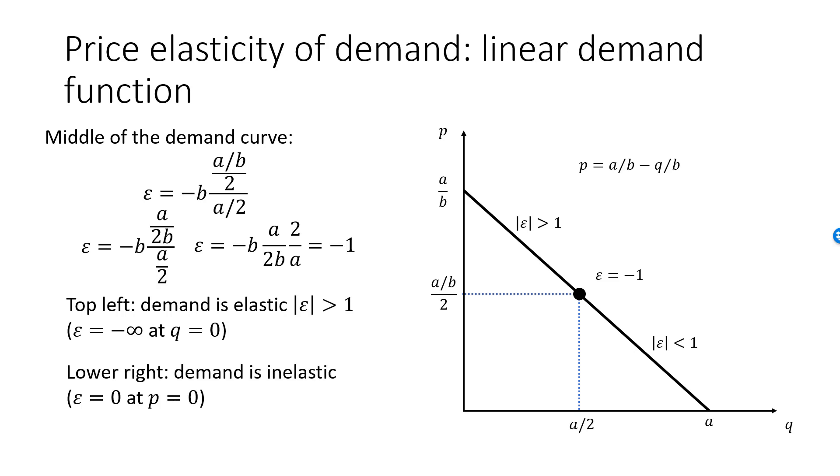Moving from the middle down and to the right, the absolute value of epsilon will decrease and demand becomes inelastic. Same reason: dQ/dP does not change, P falls and Q increases, so the ratio P over Q falls. Increasing the price by 1% in this region will lead to a decrease in demand by less than 1%. Think of this as the stiff region of the demand curve. When Q is at its maximum value A, then P is equal to 0 and epsilon is 0 as well.